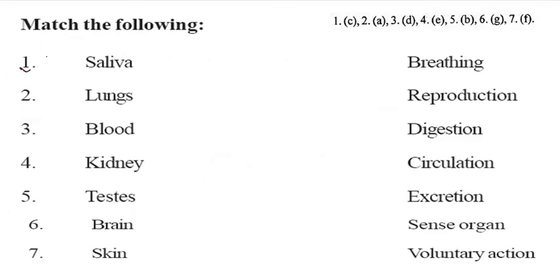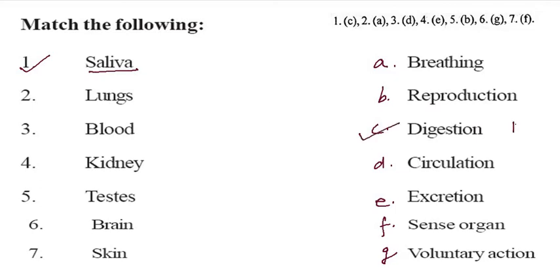Now I will match the following. First one: saliva — which one is digestion? You can write here 1. Second one is the lung — lung is for breathing, which one is breathing? You can write here 2. Third: blood — which one is blood? It is the circulation. You can write here 3.